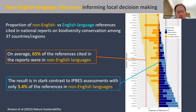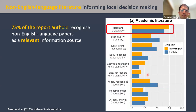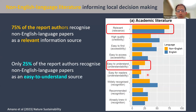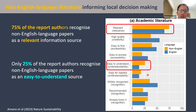This means that by ignoring non-English language literature, international assessments may overlook important knowledge on local and national biodiversity. This high proportion of non-English language references in national biodiversity reports is partly due to report authors recognizing the importance of non-English language scientific evidence. When we surveyed those report authors, 75% answered that they cited non-English language papers because they were indeed relevant to their reports, while only 25% cited them because they were just easy to understand.